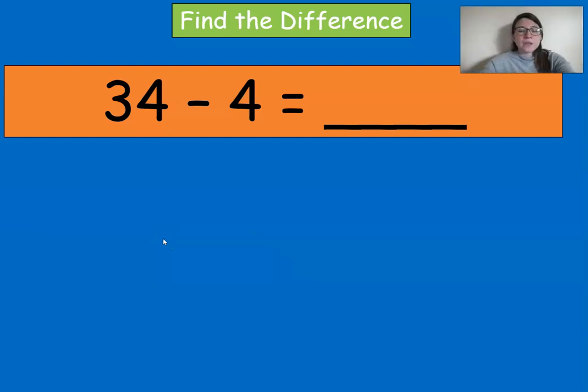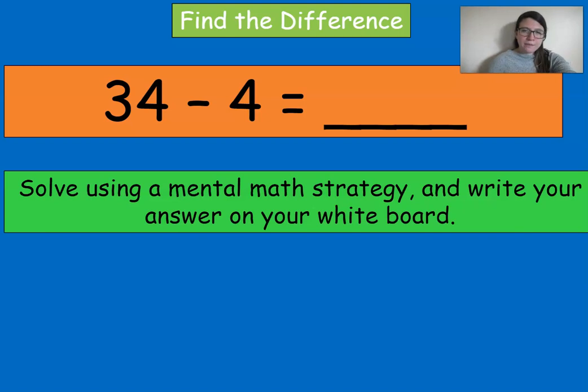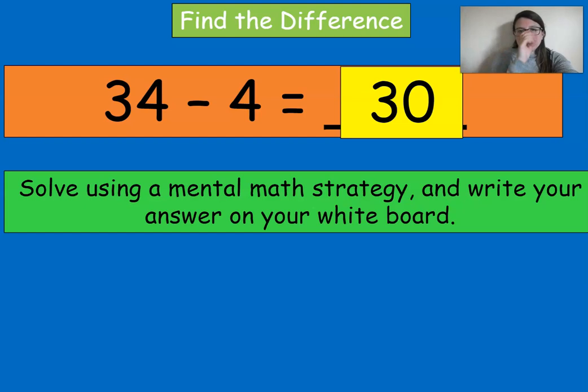All right, try this one. 34 minus 4, again using mental math. Pause and solve, write down your answer, and then we'll go over it. Good. I got 30. So for this one, we're just subtracting the ones, so if we take four ones away from four ones, we end up with three tens or 30. Awesome job.